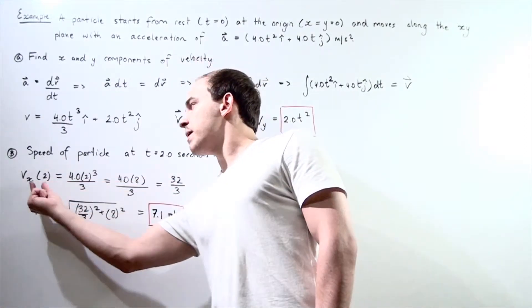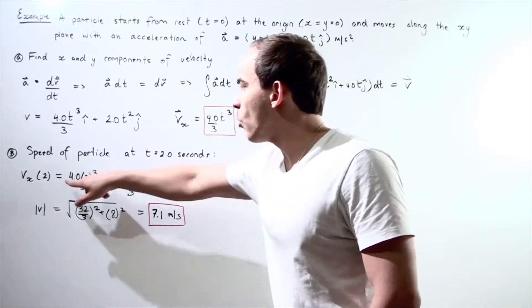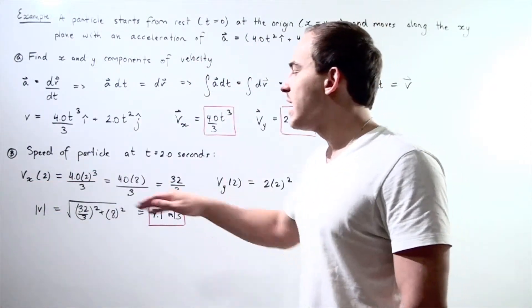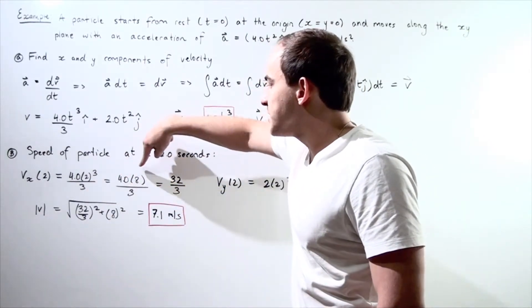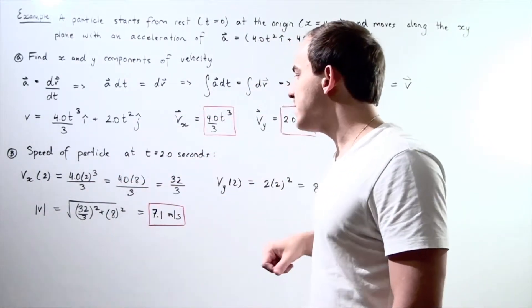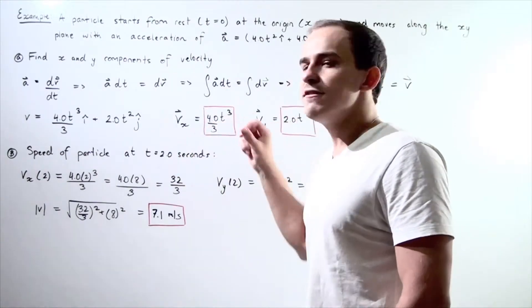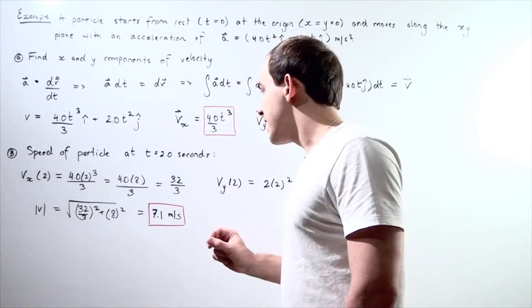vx with respect to 2 is equal to 4.0t cubed divided by 3. So, we get 4.0 times 8 divided by 3. And we get 32 divided by 3.